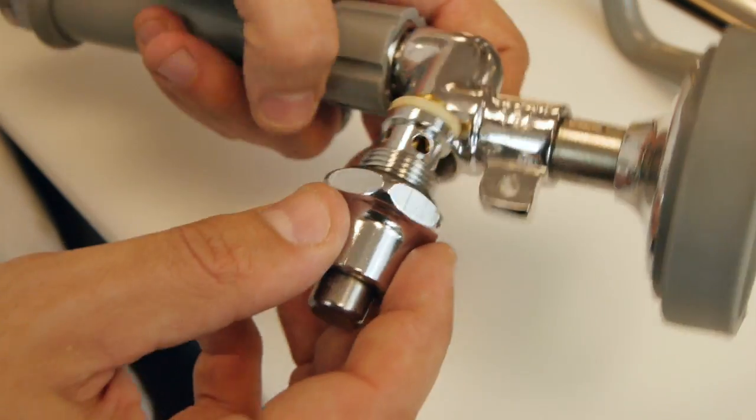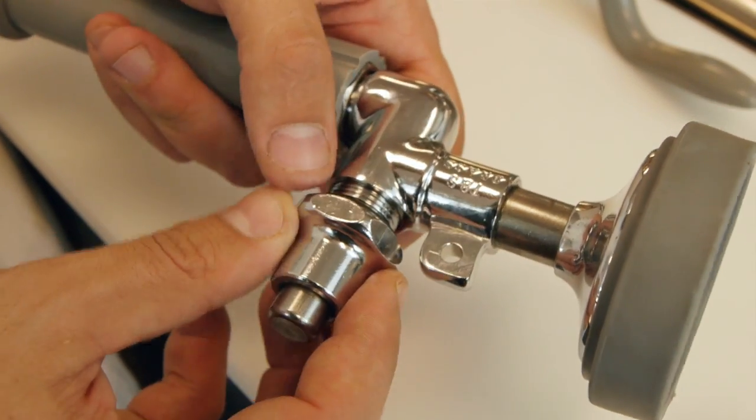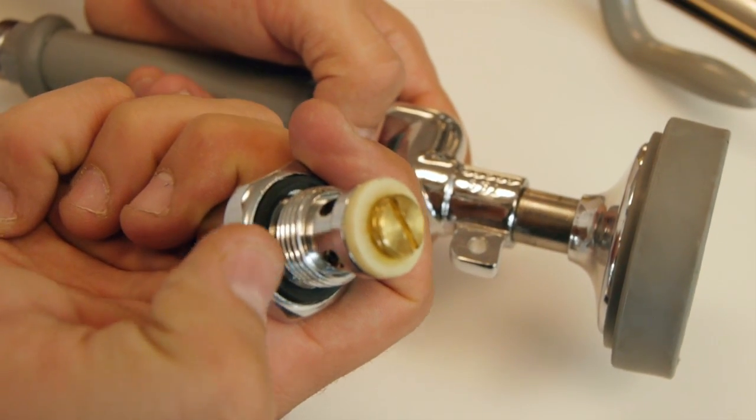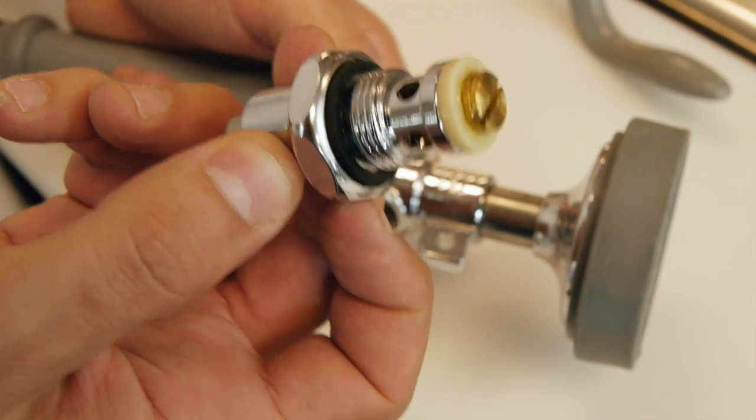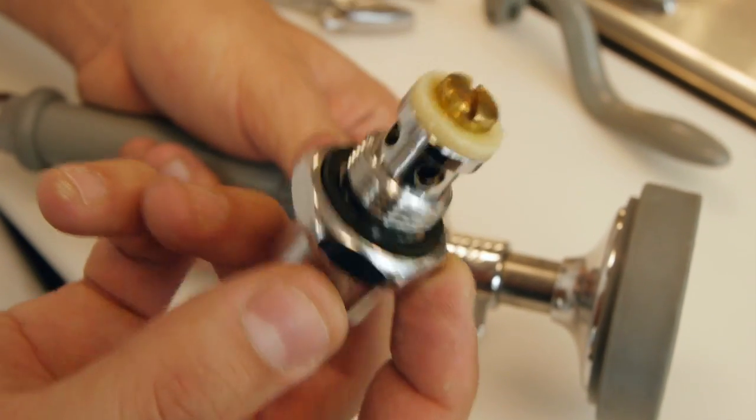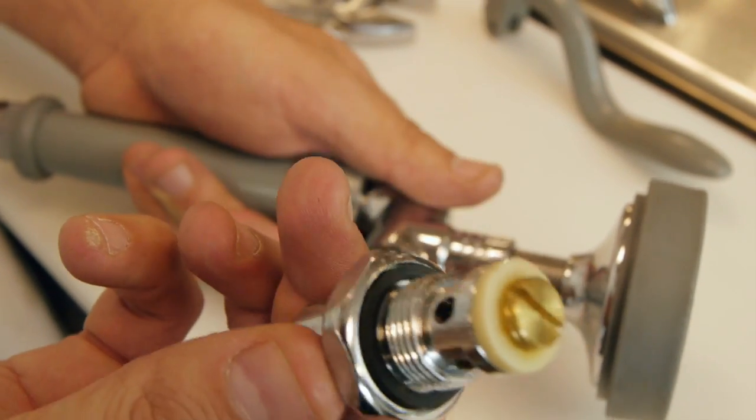However, if it's leaking from that valve stem assembly in the first place, it's most likely this black washer. Again, inspect this whole unit and the integrity of the washers and valves themselves, and just replace the whole unit if need be.